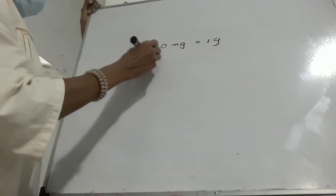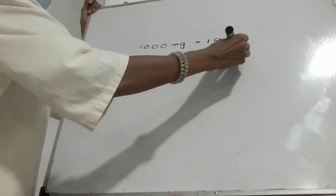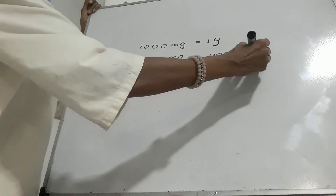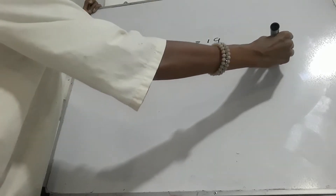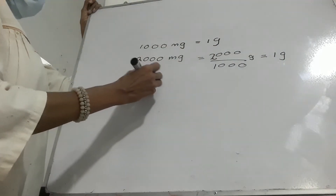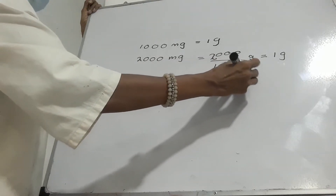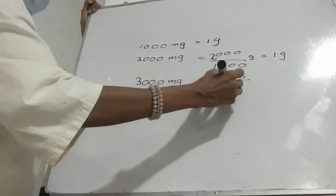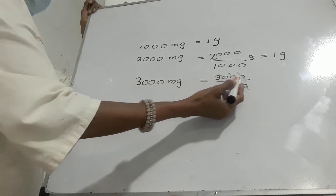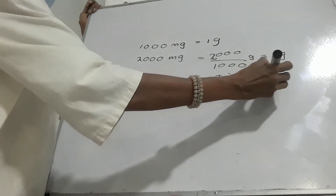2,000 milligrams divided by 1,000 is equal to 1 gram. 3,000 milligrams divided by 1,000 — when we divide by 1,000, the three zeros are cancelled out — equals 3 grams.